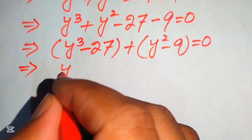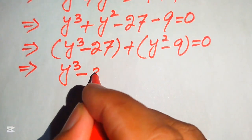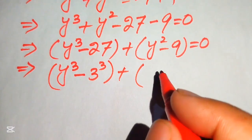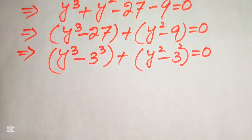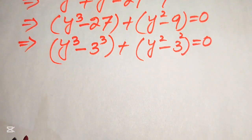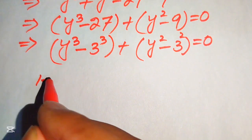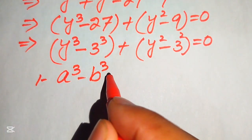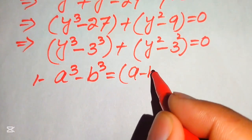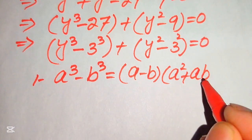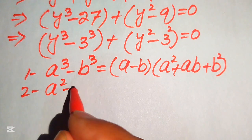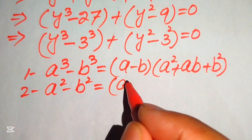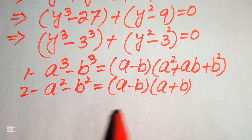We rewrite the equation as y cubed minus 3 cubed plus y squared minus 3 squared equals 0. We need to use two formulas: the difference of cubes, a³ minus b³ equals (a minus b)(a² plus ab plus b²), and the difference of squares, a² minus b² equals (a minus b)(a plus b).